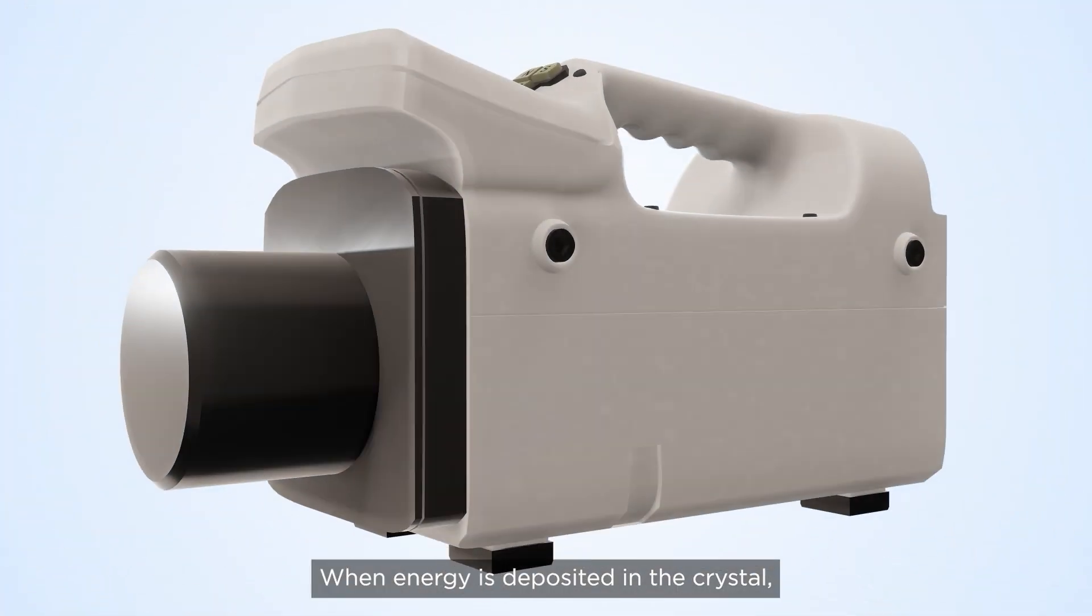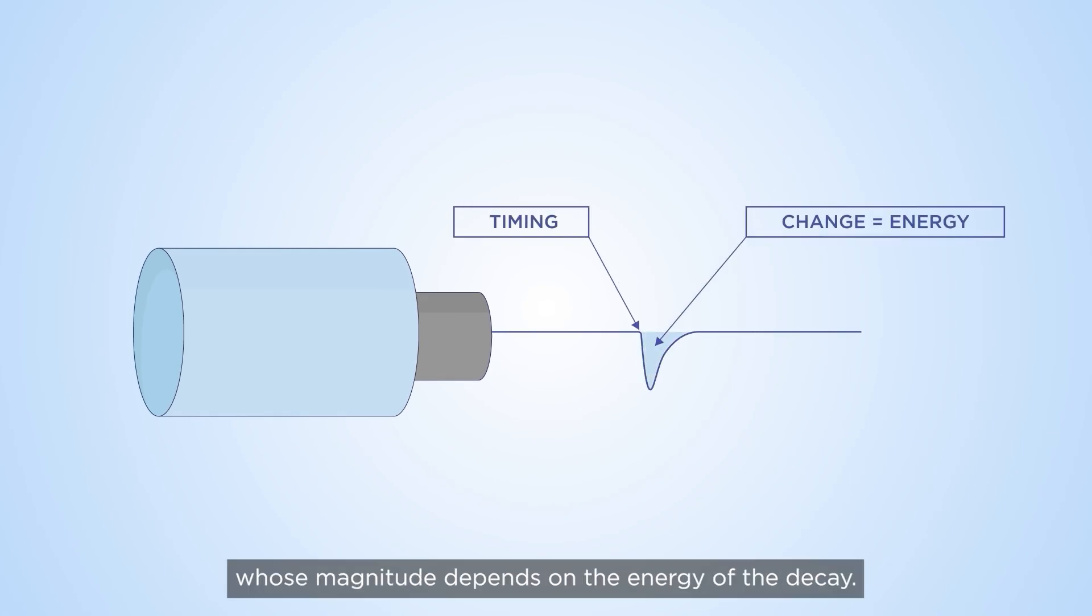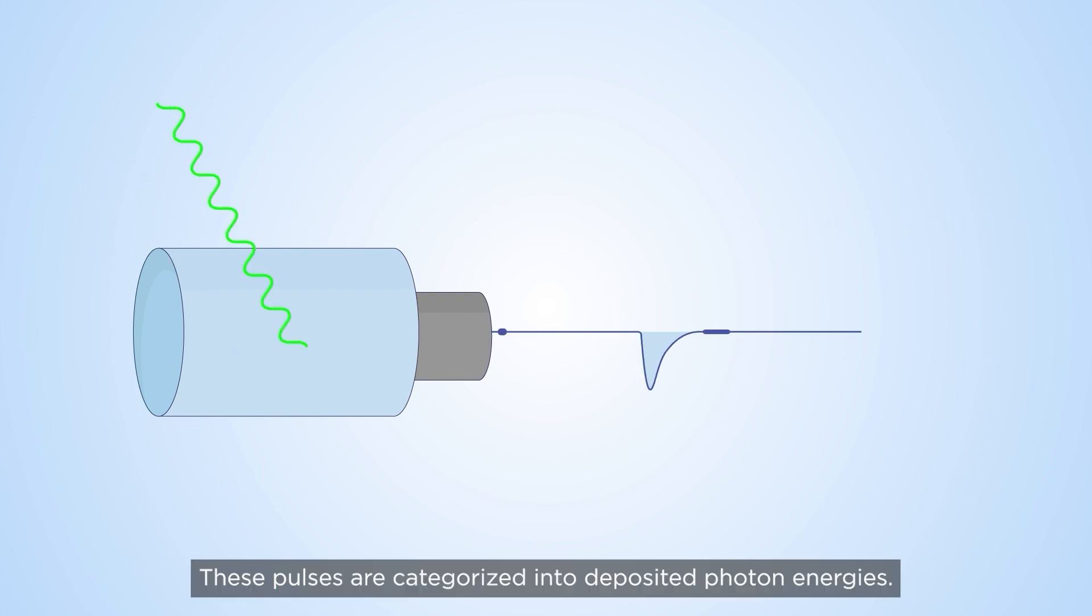When energy is deposited in the crystal, it is converted into an electrical pulse whose magnitude depends on the energy of the decay. These pulses are categorized into deposited photon energies.